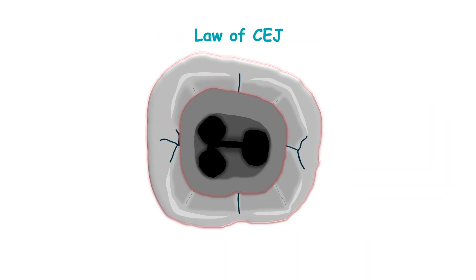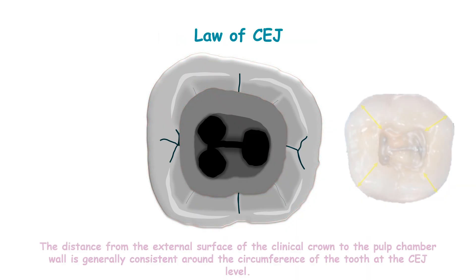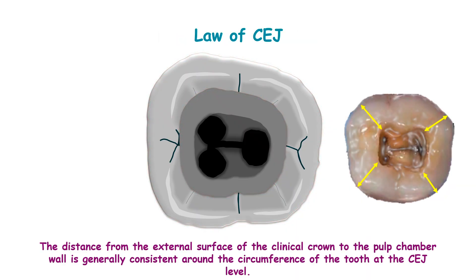Law of cemento-enamel junction: the distance from the external surface of the clinical crown to the pulp chamber wall is always consistent around the circumference of the tooth at the CEJ level.